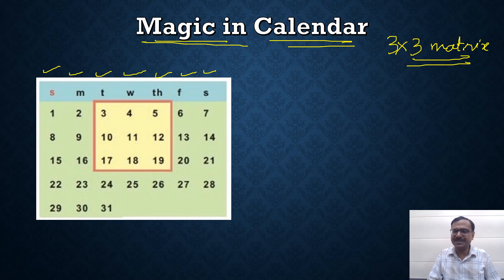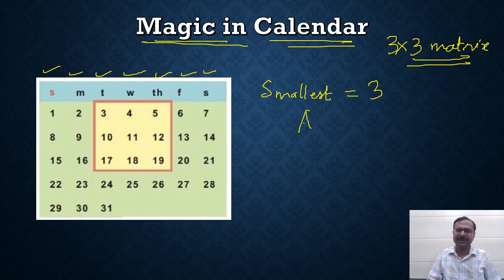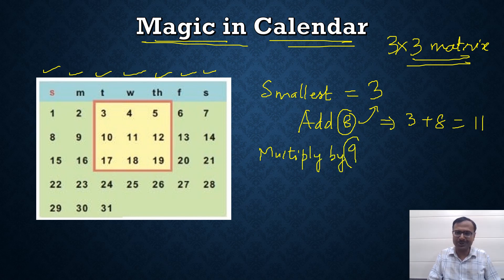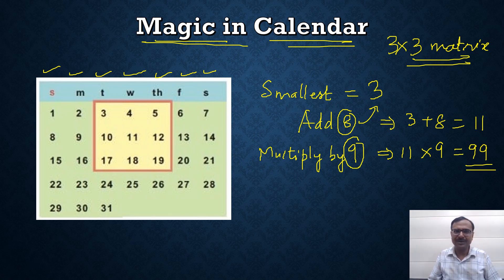The special thing is — which is the smallest number I have picked up? The smallest number is 3. What do you do with this 3? Add 8 to it: 3 plus 8 gives you 11. Then multiply this result by 9 — that's a default number. So 11 times 9 equals 99. But how does 99 relate itself to the matrix which I have marked?